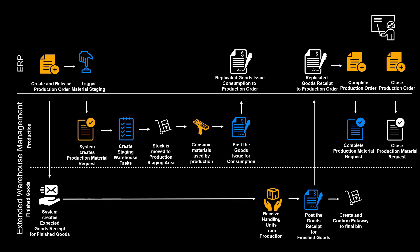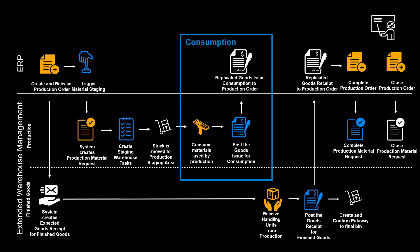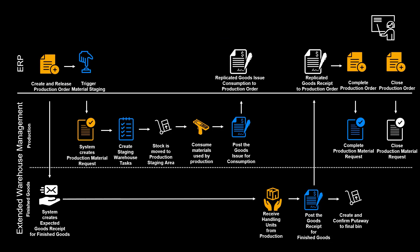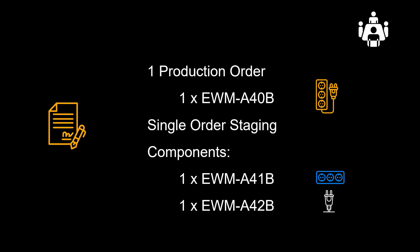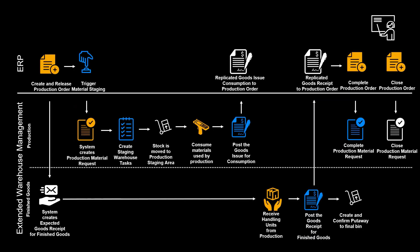As already mentioned, the production integration can be divided into three main areas: staging to production, consumption, and receipt from production. We will use one production order in our demo, produce one unit, and use single order staging for two components. Let's kick it off by creating and releasing the production order.